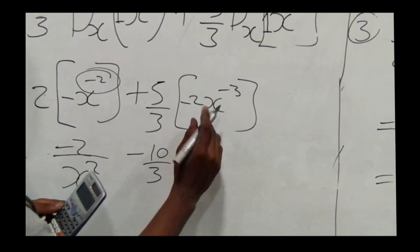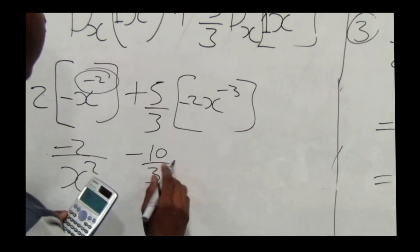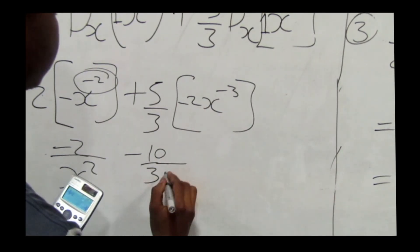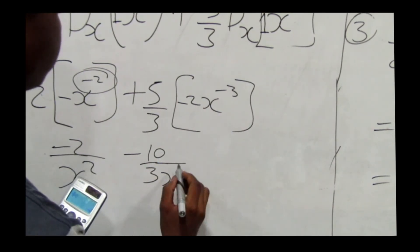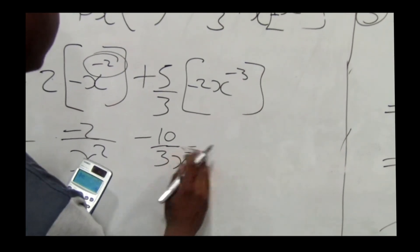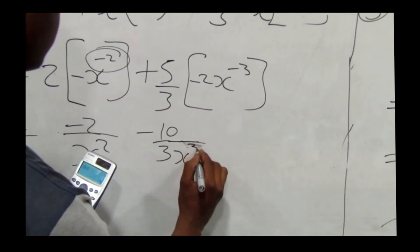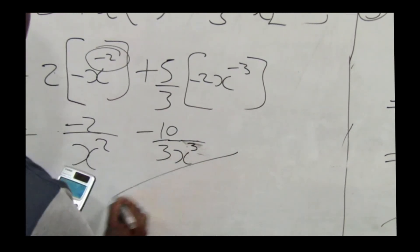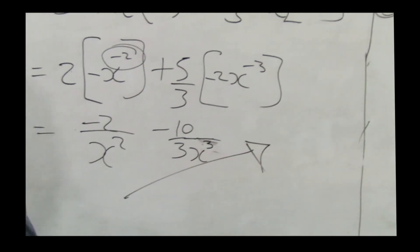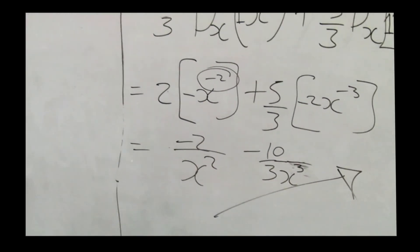Negative 10 over 3 — we take x to the power negative 3 to the denominator giving x to the power 3. So our final answer is negative 2 over x squared minus 10 over 3x cubed. Thank you guys for watching our video.